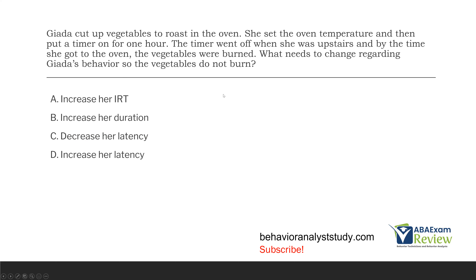Question two. Giada cut up the vegetables to roast in the oven. She set the oven temperature and then put a timer on for one hour. The timer went off when she was upstairs and by the time she got to the oven, the vegetables were burned. What needs to change regarding Giada's behavior so the vegetables do not burn? We need to change something about Giada's behavior in relation to the vegetables not burning. She set the oven, put it on for an hour, and when she got back, the vegetables were burnt — she didn't get there quick enough.